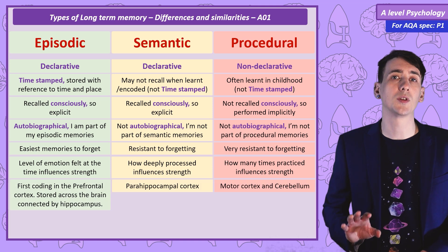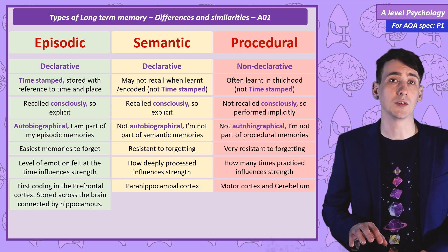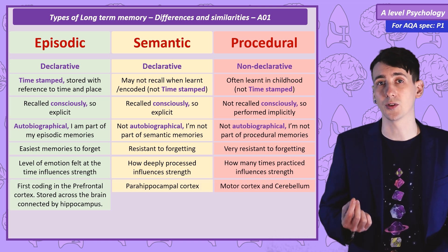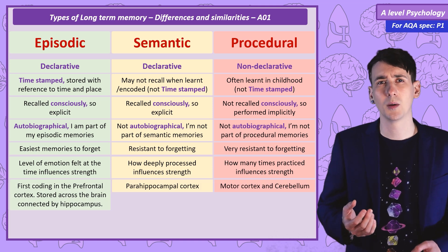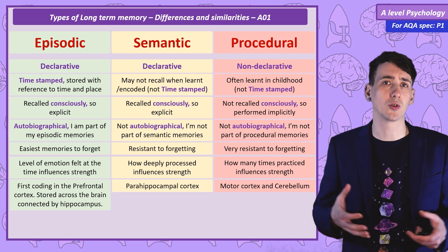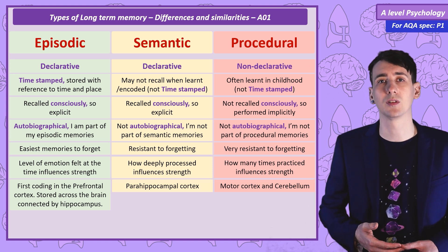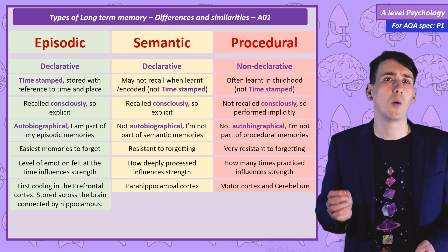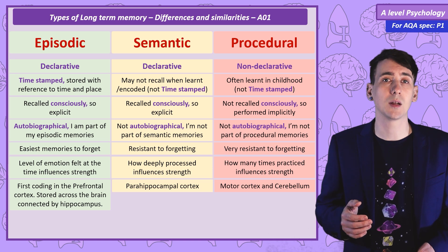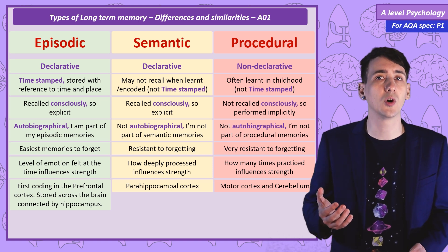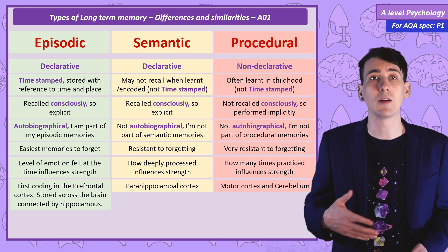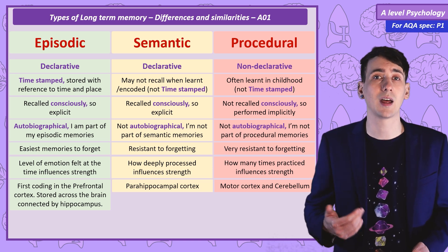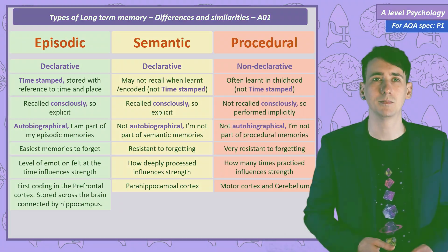Finally, when it comes to brain regions: with episodic memory, the first coding seems to be in the prefrontal cortex, but it's stored across the brain connected by the hippocampus. With semantic memory, one of the associated brain regions is the parahippocampal cortex. And for procedural memories, there's a role for the motor cortex and the cerebellum.